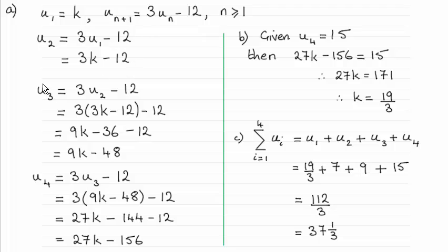Next term u3, you set n equal to 2 and you get this relationship. Substitute u2, which we just found as 3k minus 12, into here and you get 9k minus 48.